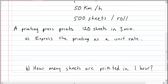So we have this problem now. We have a printing press that prints 120 sheets in 3 minutes. So what we want to do is express the printing as a unit rate. From our previous lesson, we learned how to cross multiply and divide, and we can still do that.